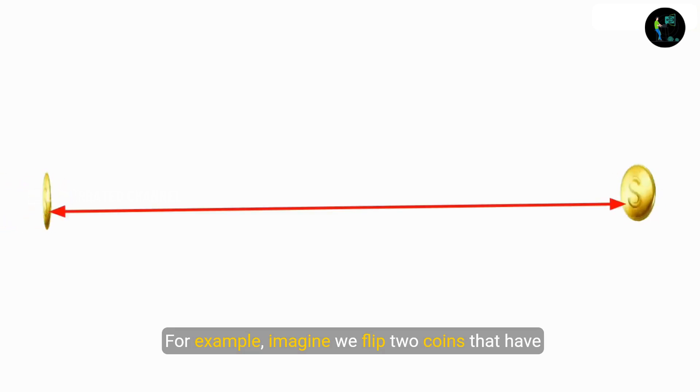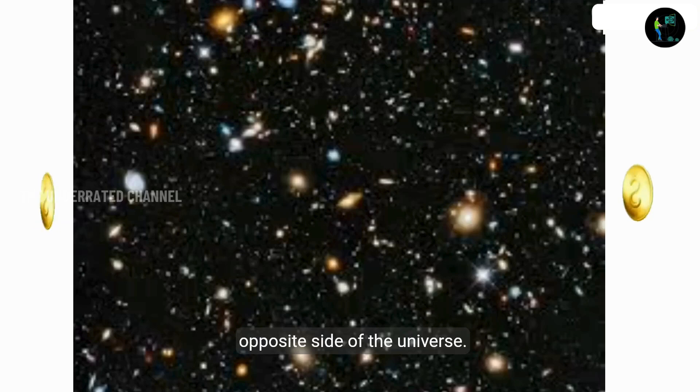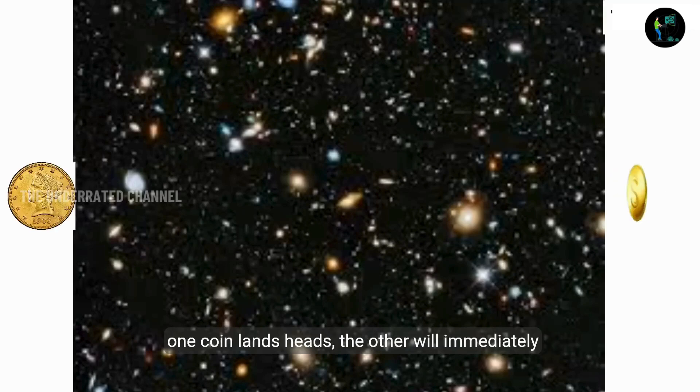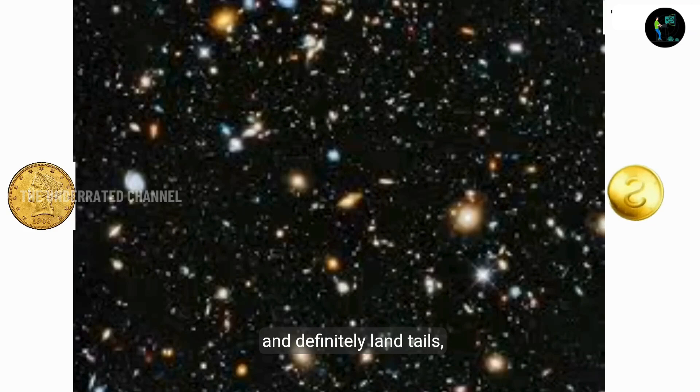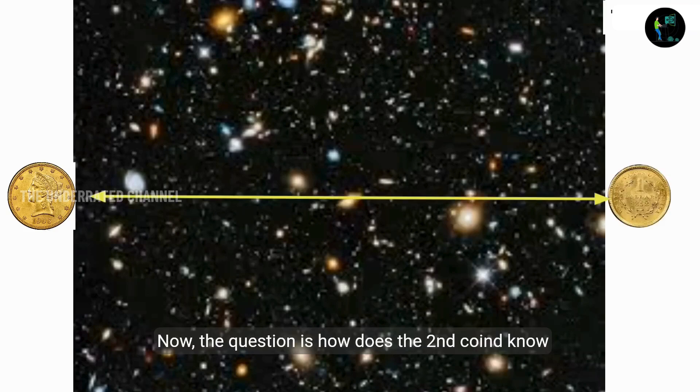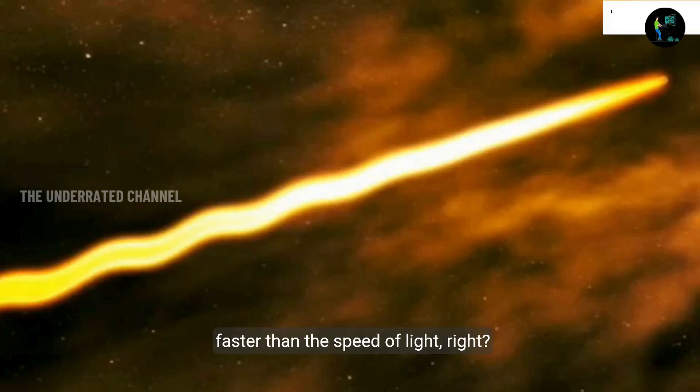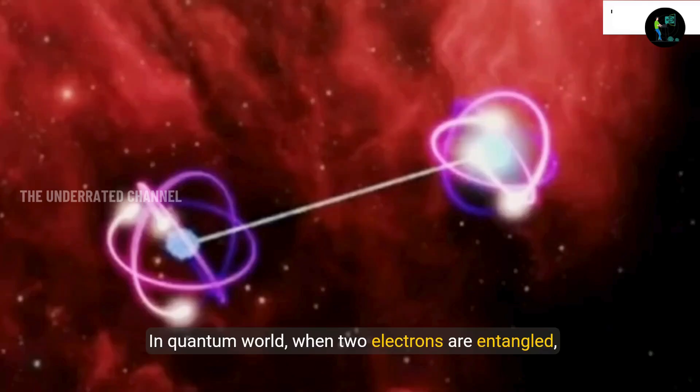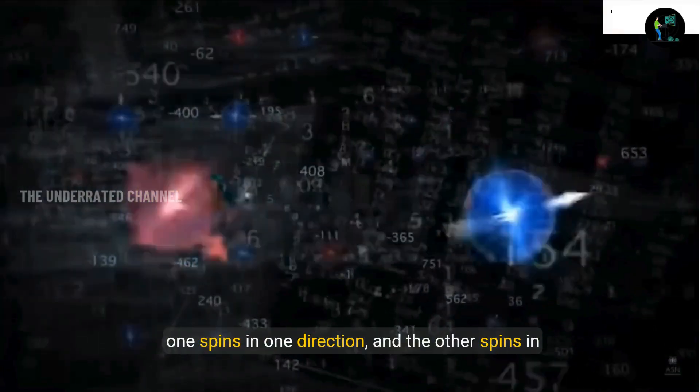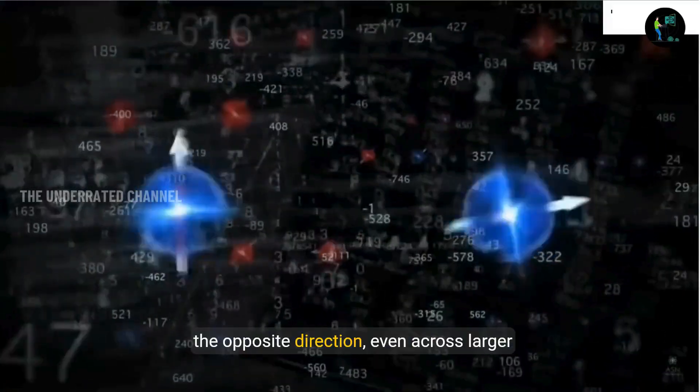For example, imagine we flip two coins that have entanglement between them. Now, no matter how far they are from each other, to be more precise, let's say two coins were placed at opposite side of the universe. Now, just because the two coins were entangled, if one coin lands heads, the other will immediately and definitely land tails. Now, the question is, how does the second coin know that the first coin is landed on heads? It is like information is passed between them instantly faster than speed of light, right? In the quantum world, when two electrons are entangled, one spins in one direction and the other spins in opposite direction, even across larger distances.